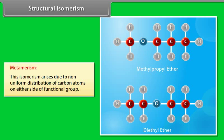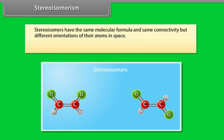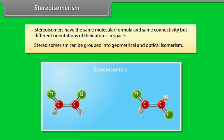An example of metamerism is methylpropyl ether and diethyl ether. Stereoisomers have the same molecular formula and same connectivity but different orientations of their atoms in space. Stereoisomerism can be grouped into geometrical and optical isomerism.